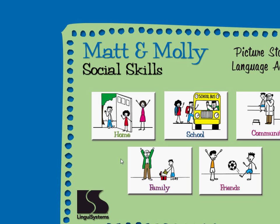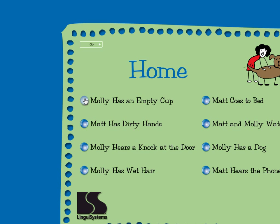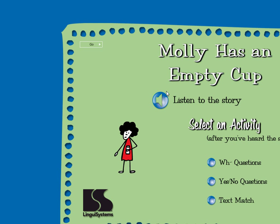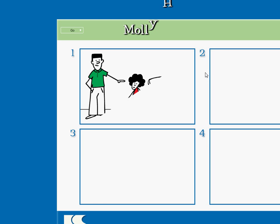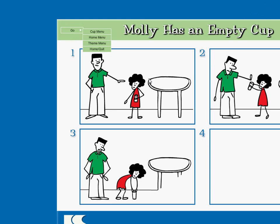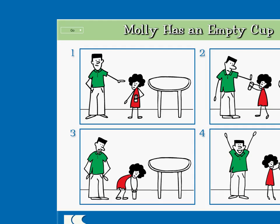Click on a theme. Home. Pick a home story. Molly has an empty cup. Let's go. This story is called Molly Has an Empty Cup. It has four parts. Click on the arrow to listen to the story.